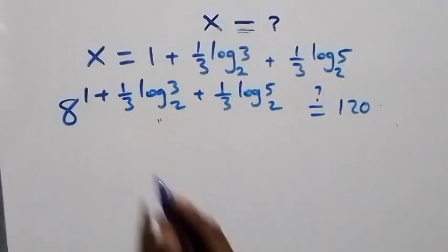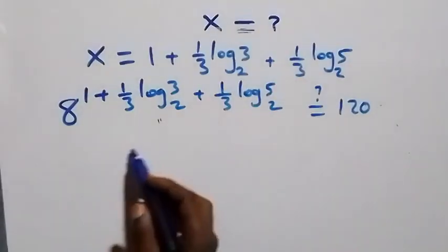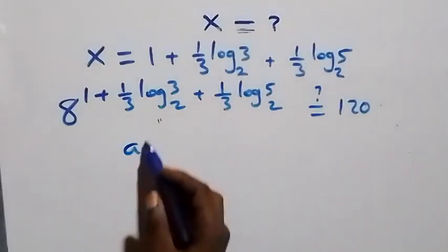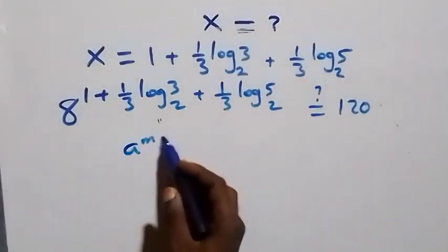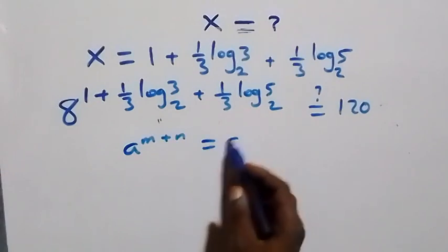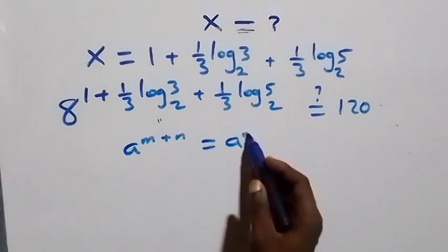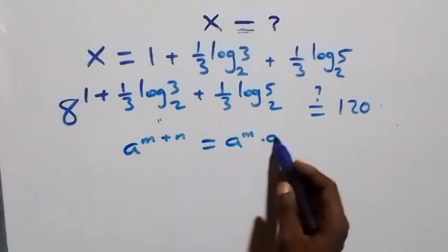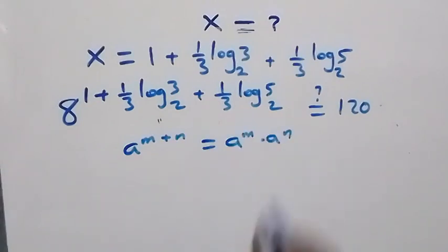This follows the law of indices: a raised to power (m + n) equals a raised to power m times a raised to power n.